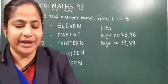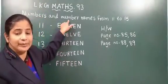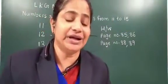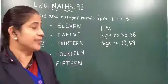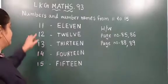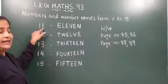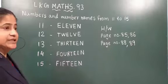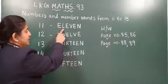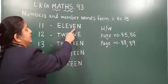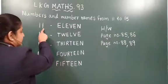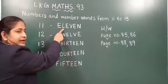Now, numbers and number names from 11 to 15 starting from page number 87. Now we will learn the numerals and number names. First: one one is eleven. What is the number name? Eleven — E, L, E, V, E, N. This is the numeral and number name.